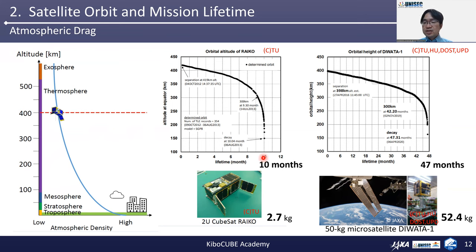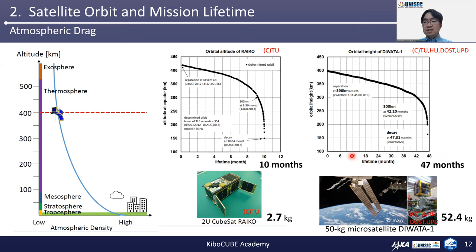Compare this with another example: the 52.4 kg microsatellite DIWATA-1, deployed by the ISS in 2016. The dimension is much larger than a CubeSat, and the weight is 25 times compared to RICO. Around 2016, the solar activity was weak and the lifetime was finally extended to 47 months — much longer than expected before launch. The important thing is that heavier weight satellites have a longer lifetime.